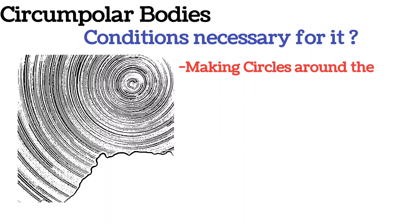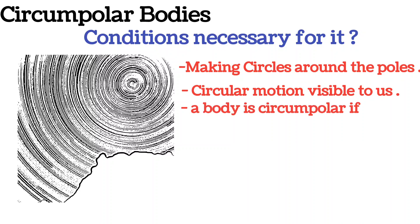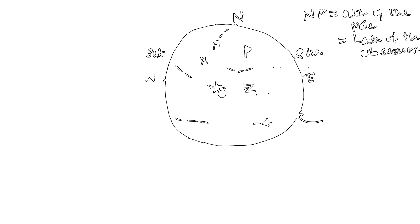It literally means making circles around the poles, and you can define circumpolar bodies as the bodies whose circular motion around the poles are visible to us. Or you can say that a body is circumpolar if the body is always above the rational horizon, which means that the body should not set. Now we will see the conditions for a body to be circumpolar.